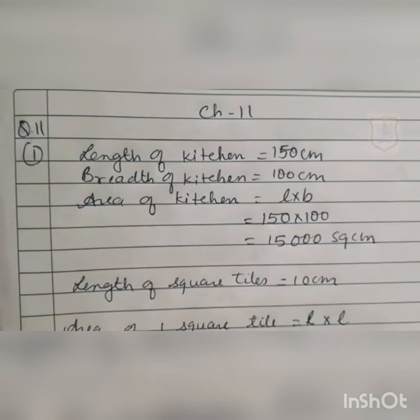Question number 2: The length of fencing around a square garden is 24 m. What is the length of one side of the garden? Here, fencing around the square garden is 24 m, which means perimeter is equal to 24 m. Perimeter of square garden is equal to 24 m, as given in the question.